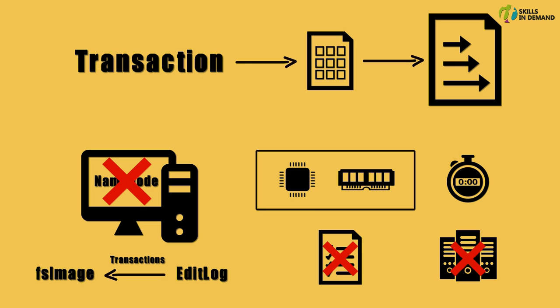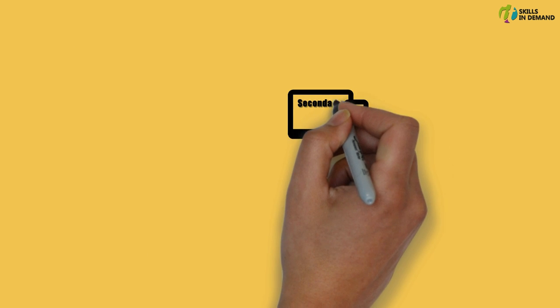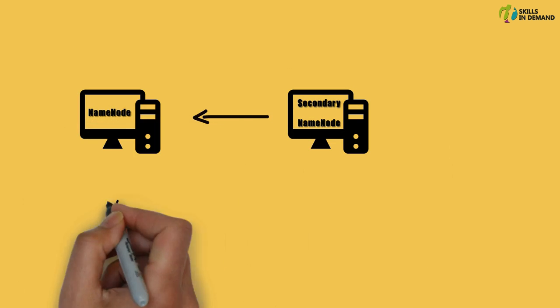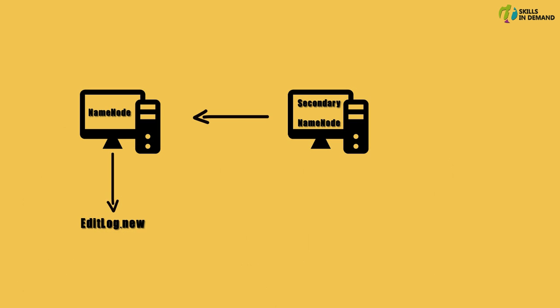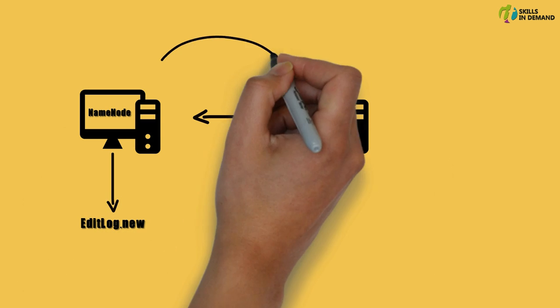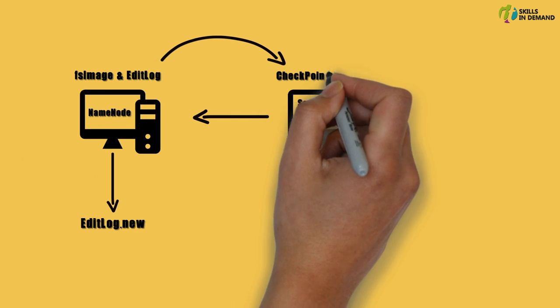Now let us see how the secondary name node can be used to prevent this situation from occurring. In order to prevent this from happening, the secondary name node instructs the name node to record the transactions to a new edit log file. Now the secondary name node copies the FS image and the edit log file to its checkpoint directory.